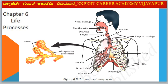Next diagram — Chapter 6: Life Processes. Diagram: Human Respiratory System.